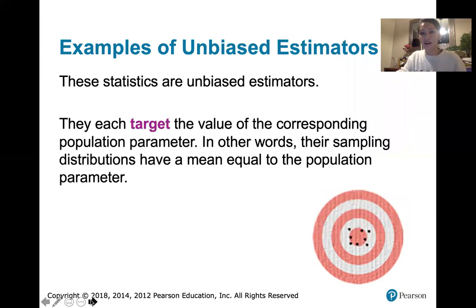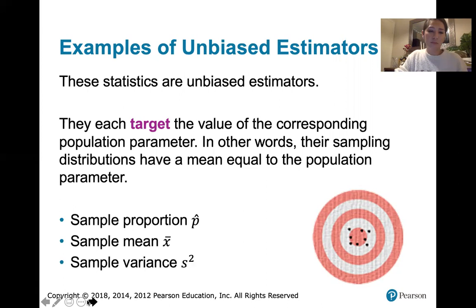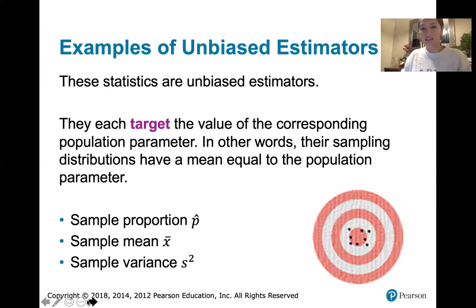Here are some more unbiased estimators — those that target the value of the corresponding population parameter, meaning their sampling distribution has a mean equal to the population parameter. The sample proportion, p hat, as we saw in earlier learning outcomes, is an unbiased estimator. The sample mean, x bar, targets the population mean mu. And the sample variance is unbiased as well. If we compute the mean of the sampling distributions for each of these, we get exactly the population proportion, the population mean mu, or the population variance sigma squared.